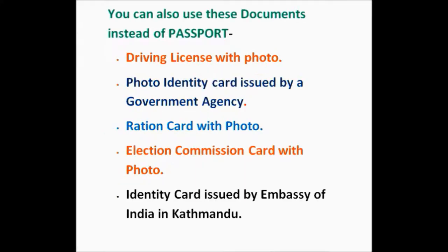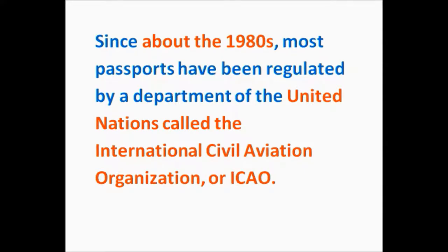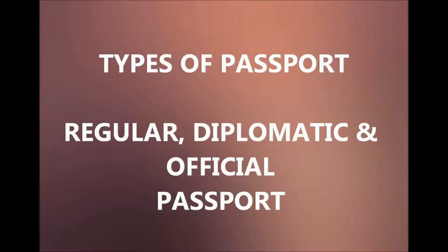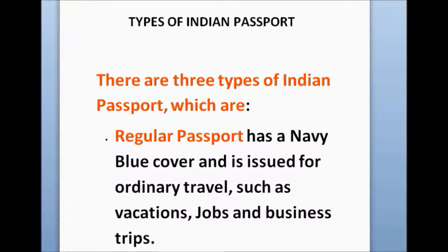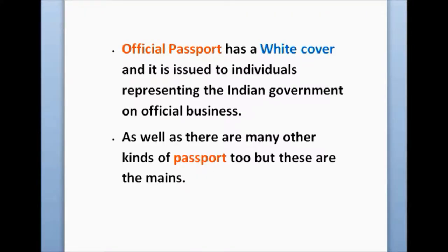When citizens apply for a passport, they need to prove that they are citizens of that country by birth or acquired citizenship. Several documents are required to be issued a passport. Your passport is not just registered in your country but also in an international database shared only among governments. There are three types of Indian passports: the regular passport, which has a navy blue color and is issued for ordinary travel such as vacations, jobs, and business trips; the diplomatic passport, which has a maroon cover and is issued to Indian diplomats and top-ranking government officials; and the official passport, which has a white cover and is issued to individuals representing the Indian government on official business.